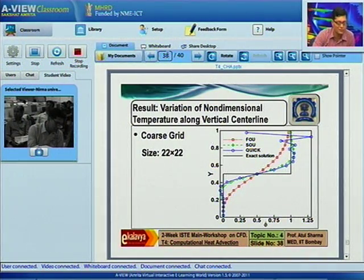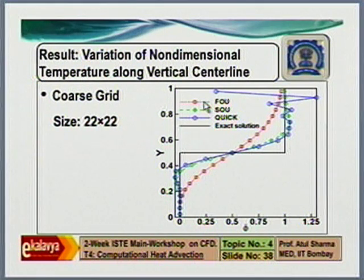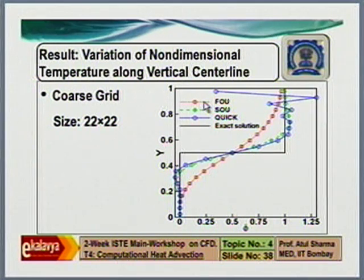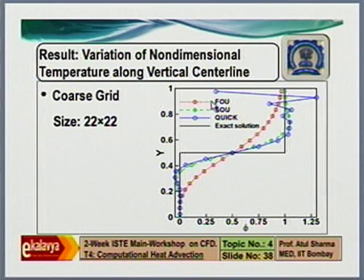My question is from topic number 4, slide number 38: what is the reason for the unbounded solution for SOU (second order upwind) and QUICK schemes? The question is about unboundedness in these schemes. Recall the steady-state one-dimensional convection lecture where it was shown that when using a central difference scheme with Peclet number greater than 2, there is an unboundedness or oscillation. A similar thing happens with the QUICK scheme and second order upwind scheme — the relationship between the neighboring coefficients is such that it results in oscillations and unboundedness on a coarser grid.